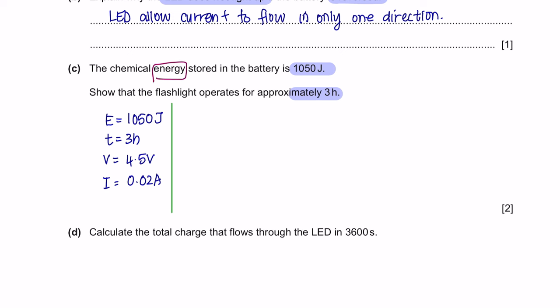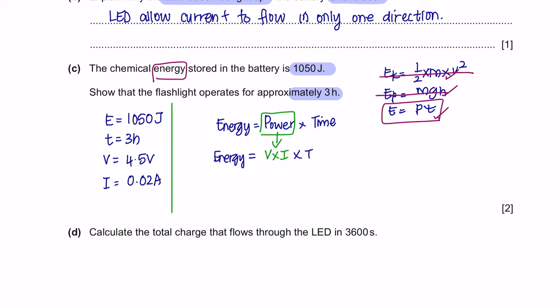Now, energy. There are a few formulas related to energy. Kinetic energy, potential energy, and energy in general. Of course, we're not going to use the first two and this will be the formula that we are going to apply. Energy equals power times time. However, we are not given with power here. But in order to calculate power, we can use the formula V times I. So the question needs you to show that the time here would give us 3 hours. So let's use this formula to find that out.